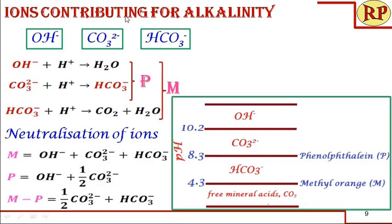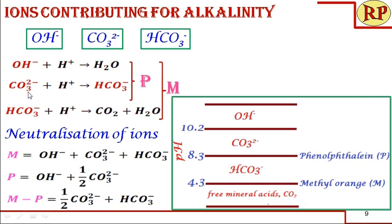The ions contributing to alkalinity are hydroxide, carbonate, and bicarbonate. When we titrate against acid (represented as H⁺ ions): hydroxide reacts with acid to form water; one mole of carbonate reacts with one mole of acid to form bicarbonate. These two reactions are indicated at the phenolphthalein endpoint. But we get bicarbonate, which then reacts further with acid to form carbon dioxide and water. So only half of the carbonate is indicated with the phenolphthalein indicator.